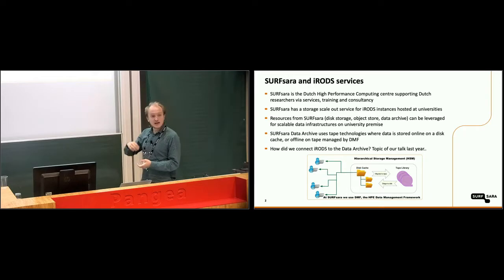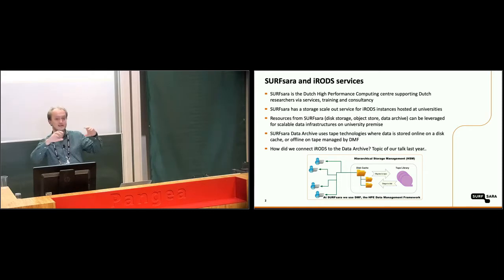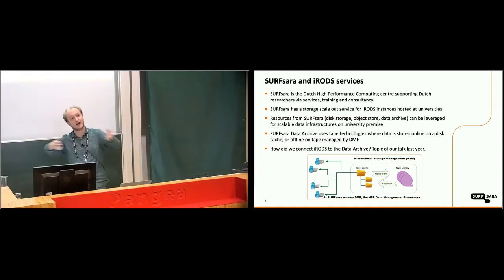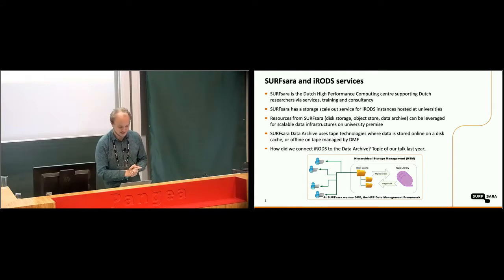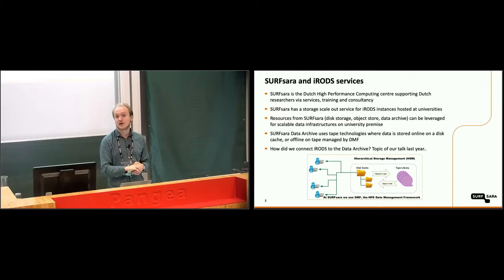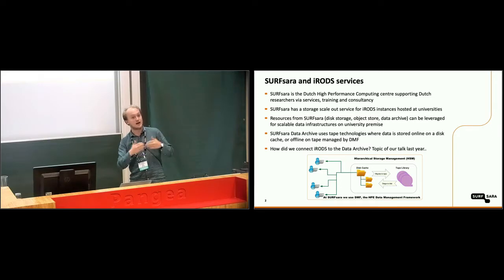The idea is that you can have both online data and offline data, where online is first on a disk cache on tape, and then there's a tape robot reading data from the cache, transporting it on tape, and locking it up somewhere. Then it's really offline, but the nice thing is you can still see your data — just not the bitstream. The topic of last year's talk was really how we connected this data archive to IRODS — how people with their own IRODS instance can use the tape archive as a storage resource.